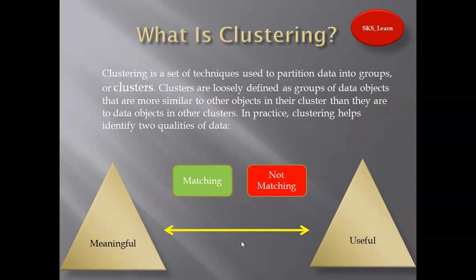What is clustering actually? If I see the definition — clustering is a set of techniques used to partition data into groups or clusters. Clusters are loosely defined as a group of data objects that are more similar to other objects in their cluster than they are to data objects in other clusters.